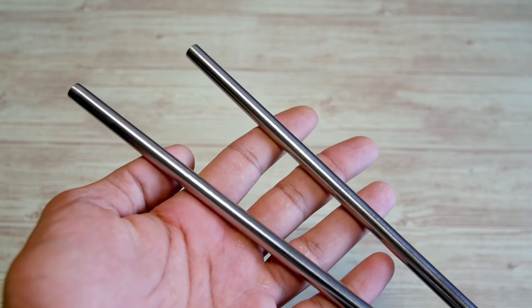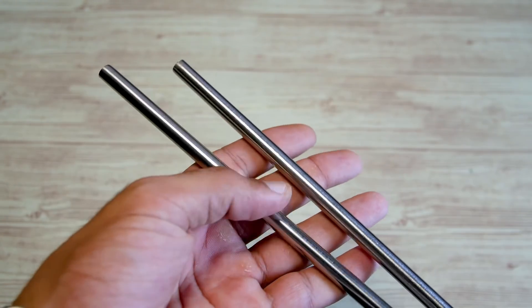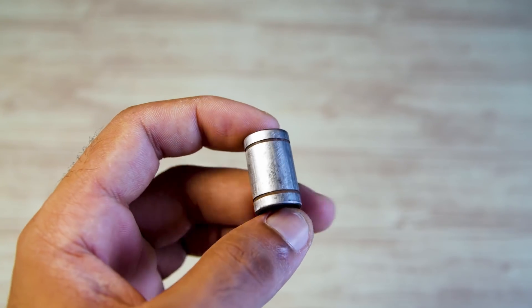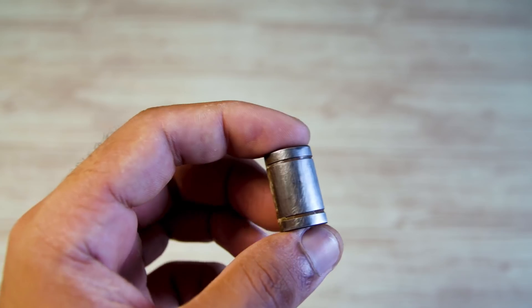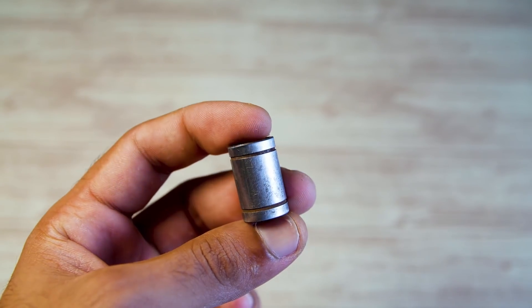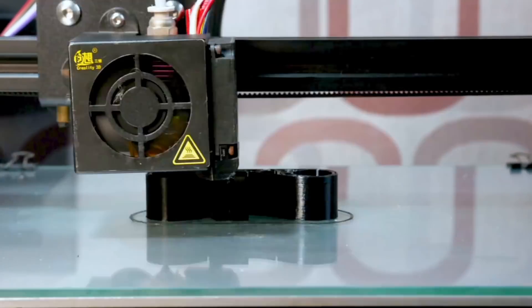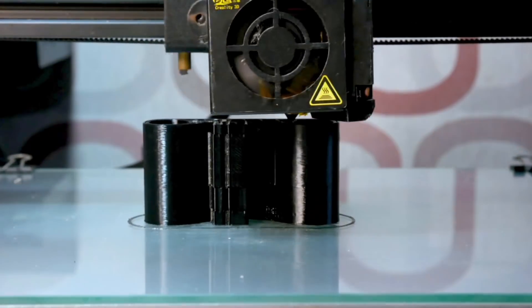I specifically designed this project around the 8mm hardened steel rods and the LM8UU bearings since these are commonly used in 3D printers and make sourcing the parts very easy. Speaking of 3D printers, all the physical parts are 3D printed. Here's how you can assemble them.